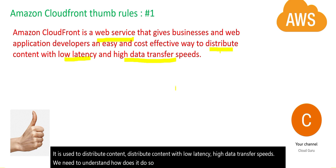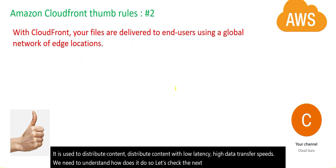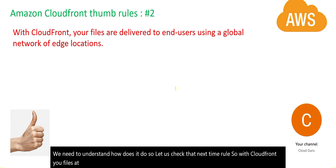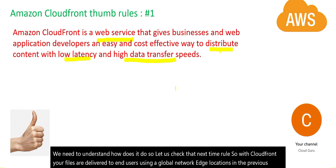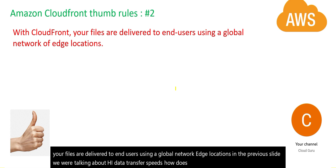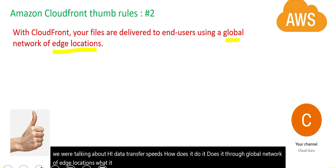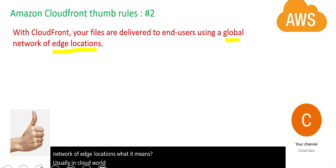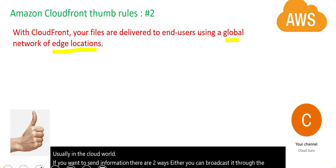With CloudFront, your files are delivered to end users using a global network of edge locations. We were talking about high data transfer speeds — how does it do it? It does it through a global network of edge locations. In the cloud world, if you want to send information there are two ways.